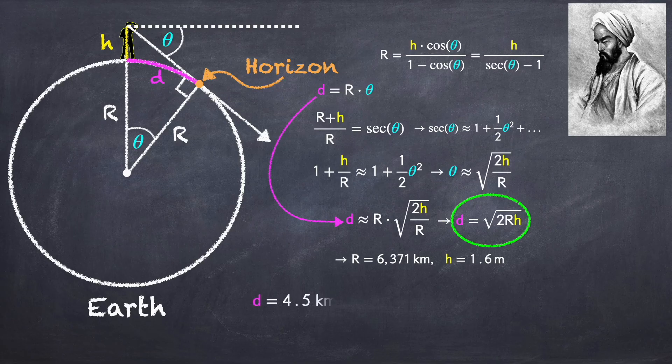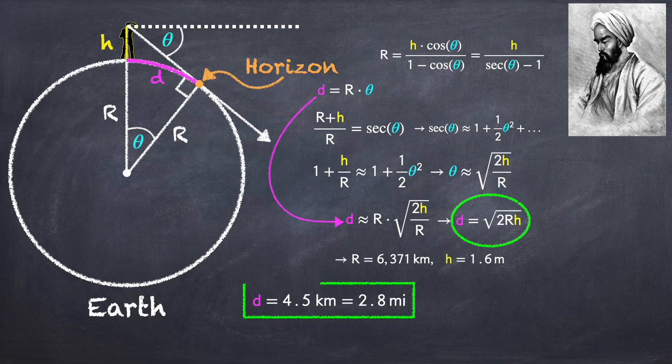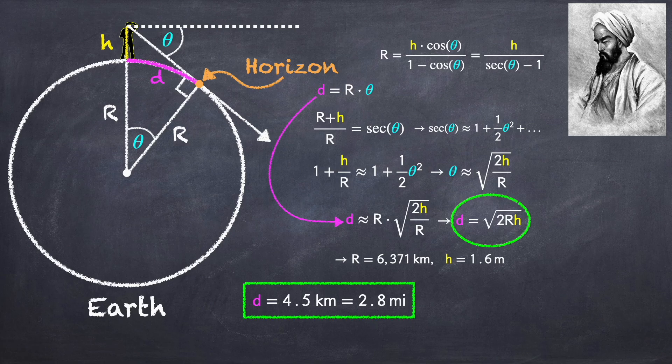Plugging the numbers in, this gives us that the distance to the horizon is 4.5 kilometers, or 2.8 miles. Now this is the distance to the horizon if you're standing on the beach.